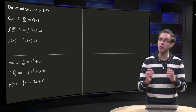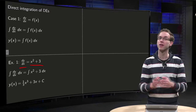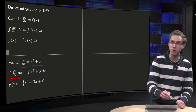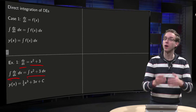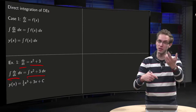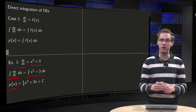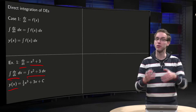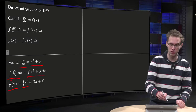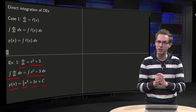Let's see an explicit example. If we have dy/dx equals x squared plus 3, how do we solve this differential equation? Integrate both sides with respect to x. On the left-hand side we differentiate y and then integrate, so we get y(x). On the right-hand side we integrate x squared plus 3 with respect to x, which yields one-third x cubed plus 3x plus an integration constant.